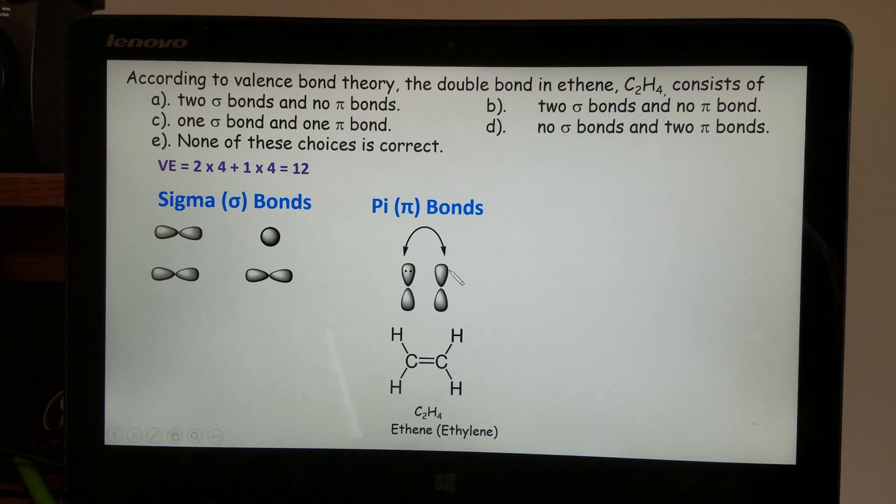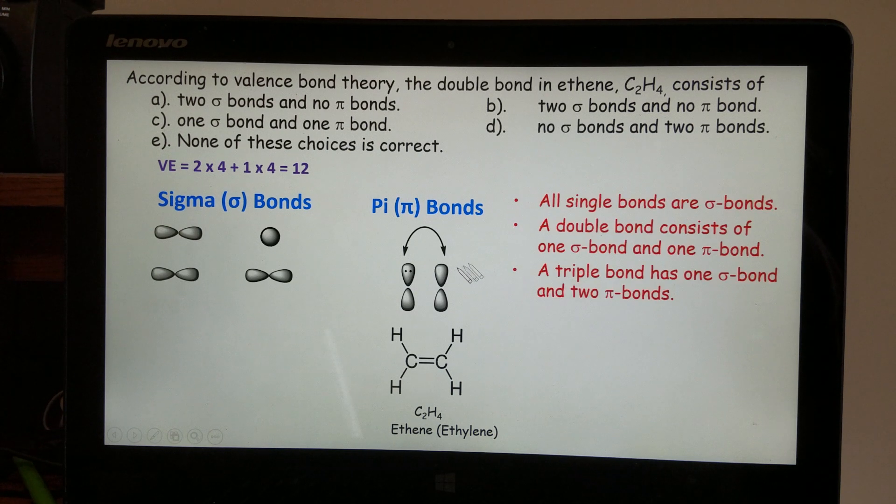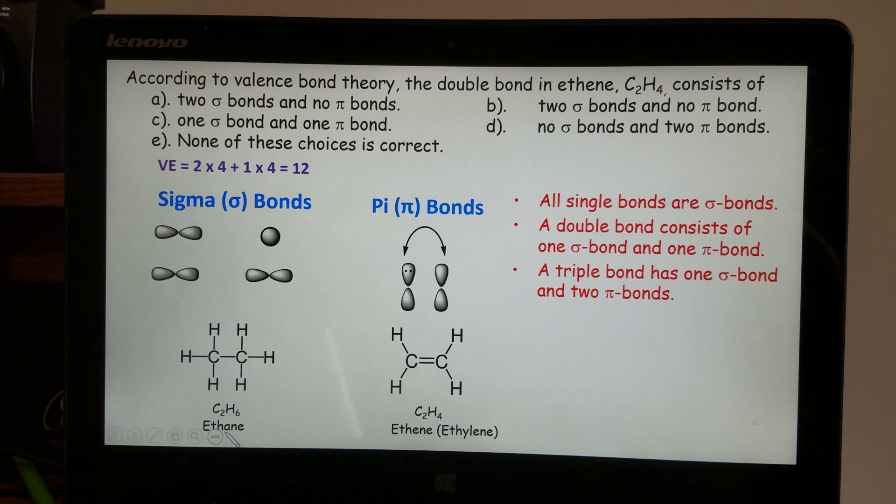All single bonds are sigma bonds. If we look at this molecule C2H6, now C2H4, so this is ethane.